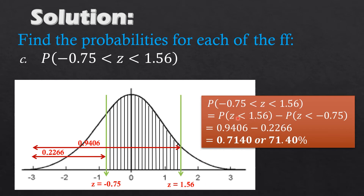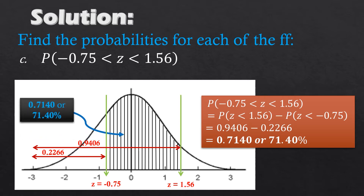We subtract the probability of z less than 1.56 minus the probability of z less than negative 0.75. So we have 0.9406 minus 0.2266, which equals 0.7140, or 71.40 percent.